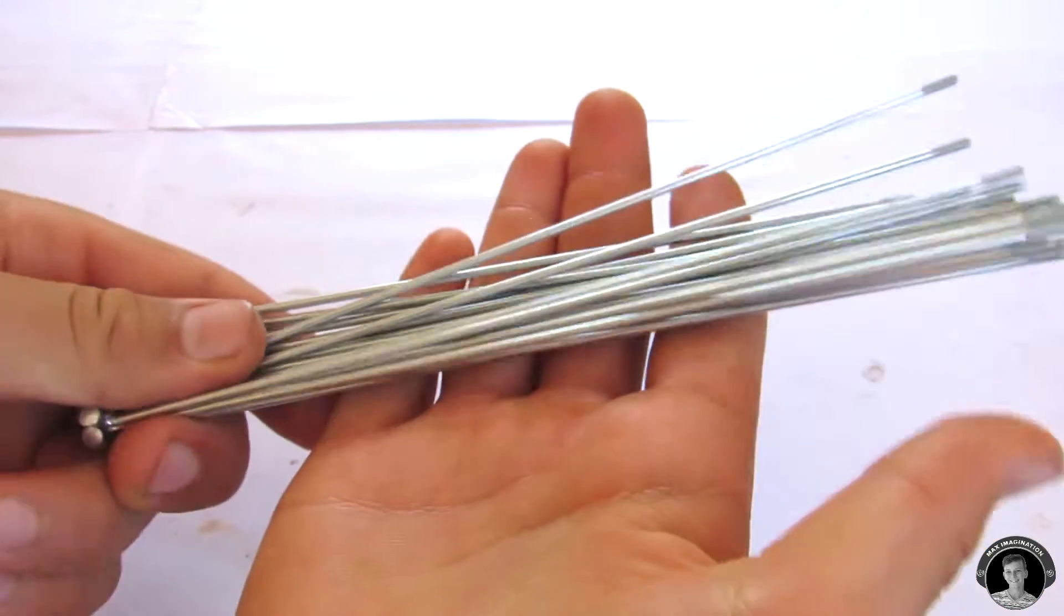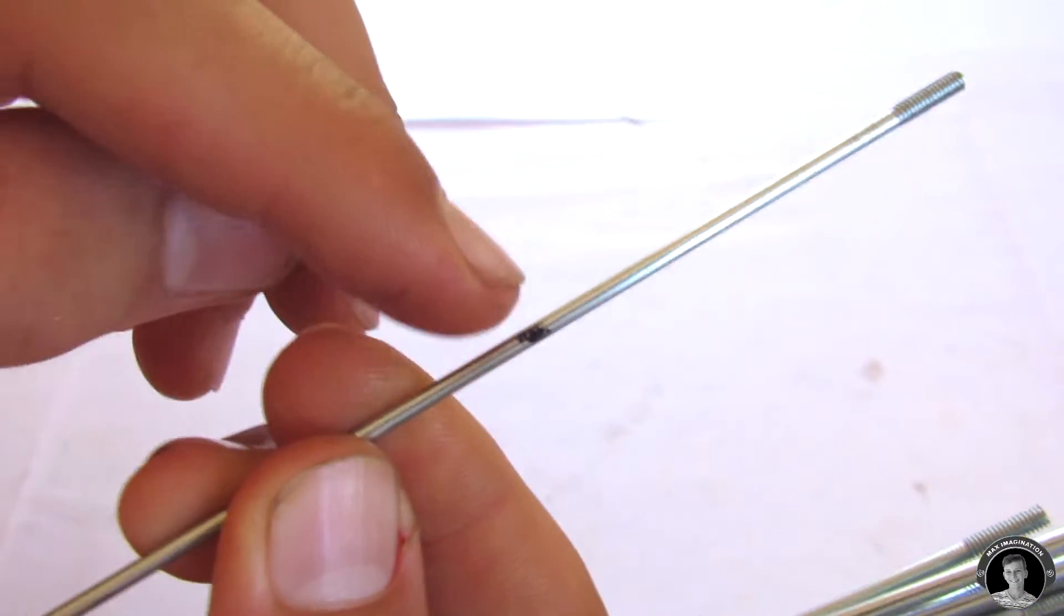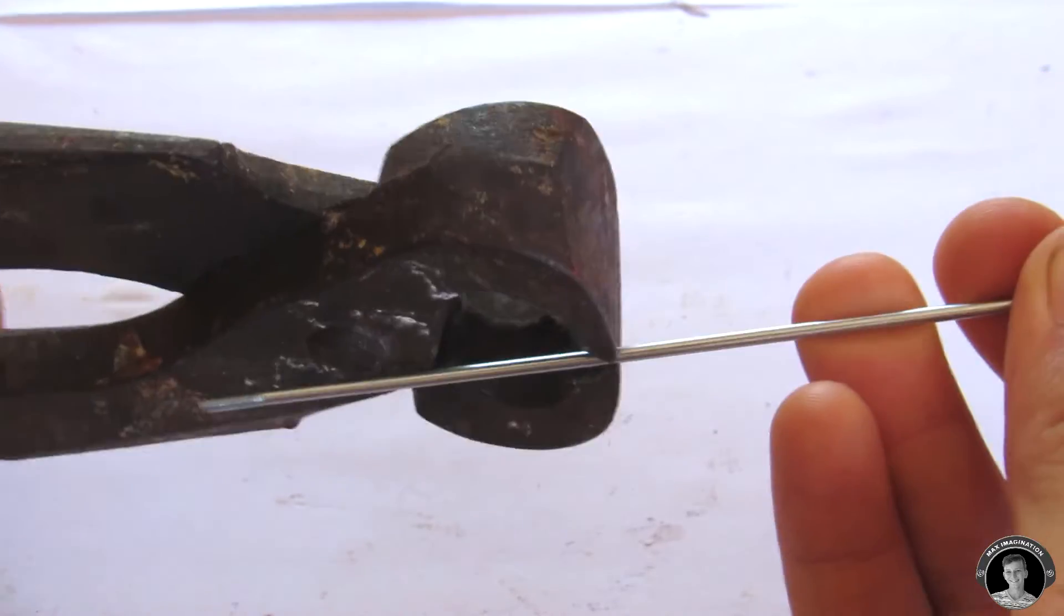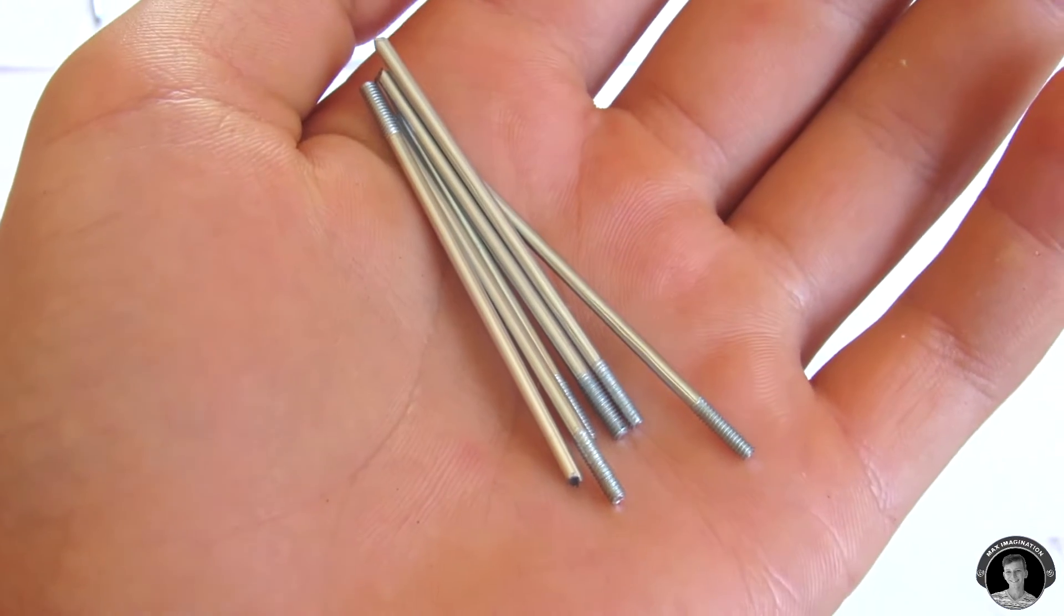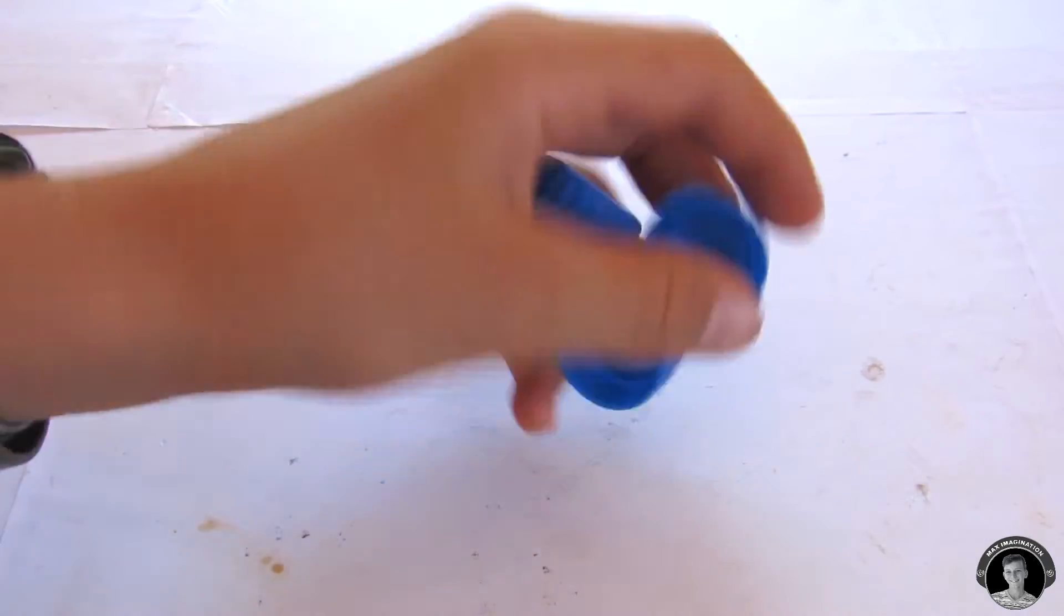We'll be using 2mm spokes for our wheels. Cut a 5mm section off from a spoke that has the thread part on it, then do this 5 more times, making sure that each and every one of them has a thread on it.